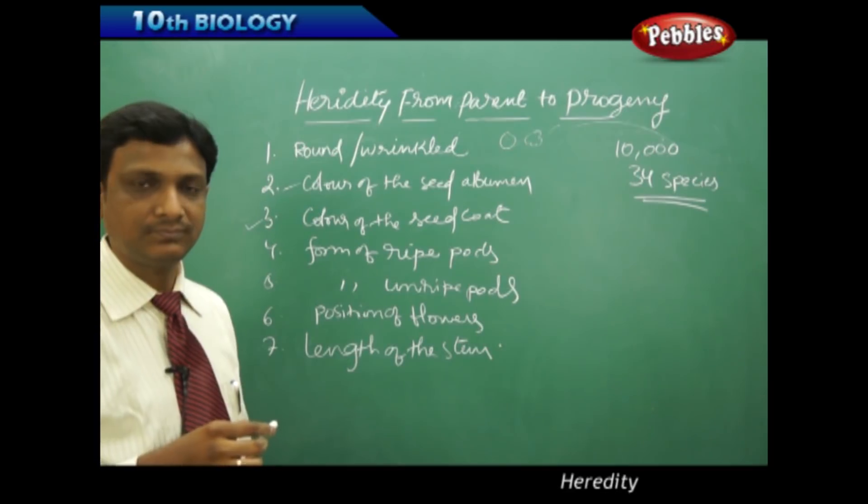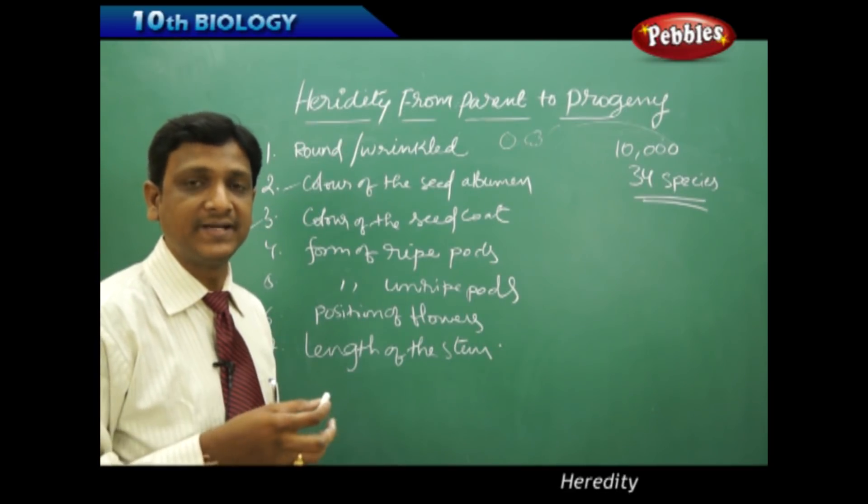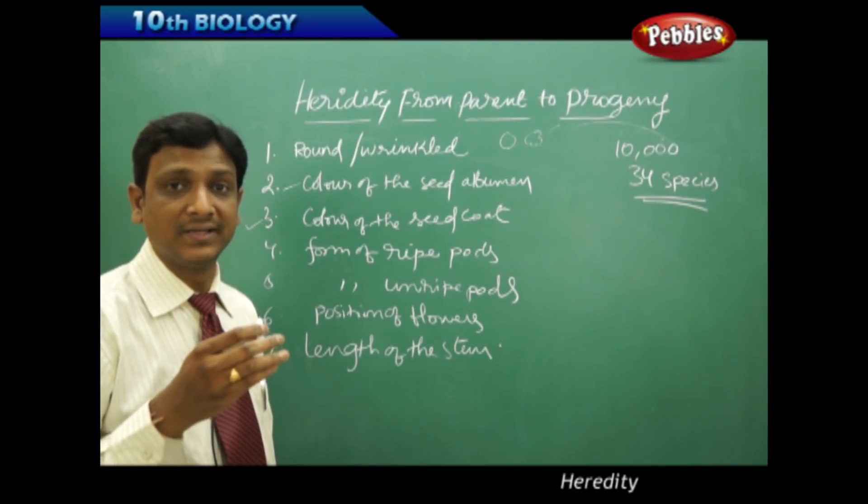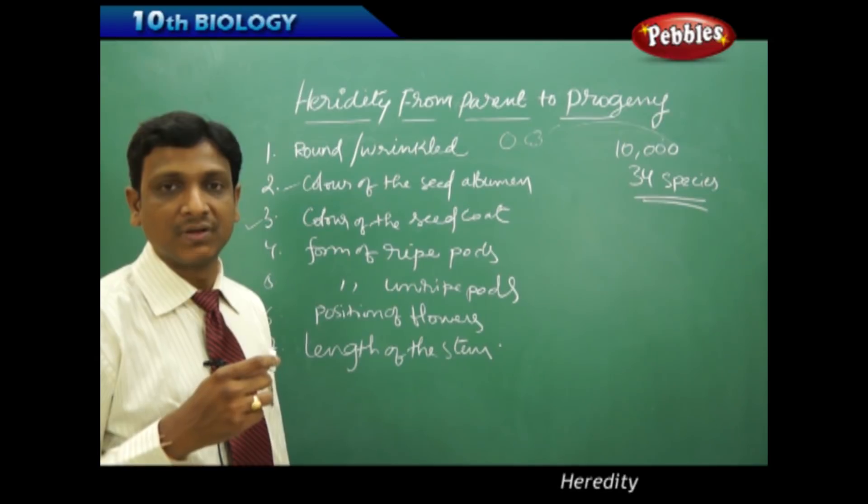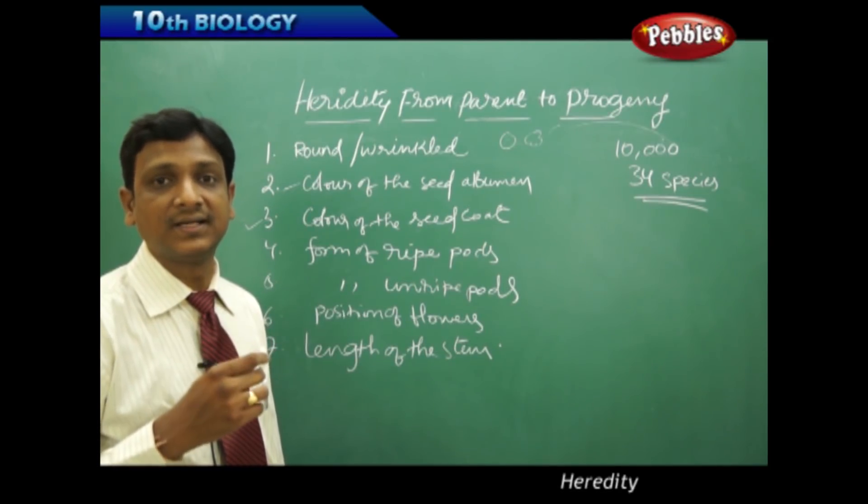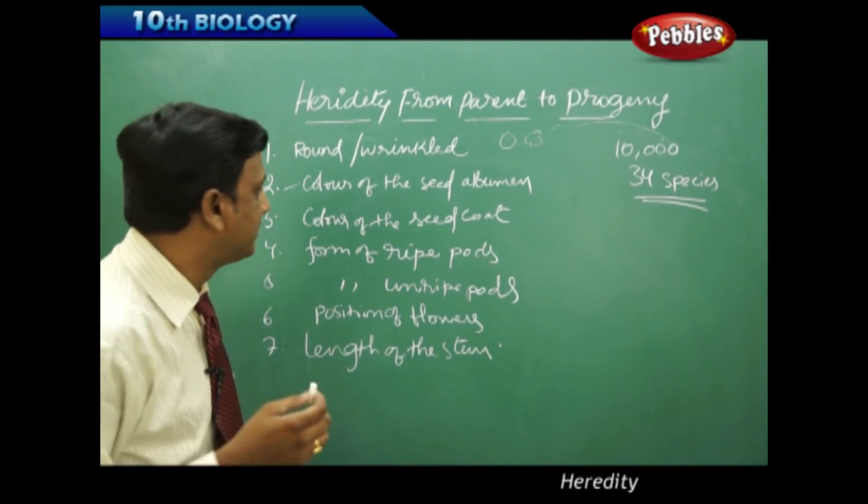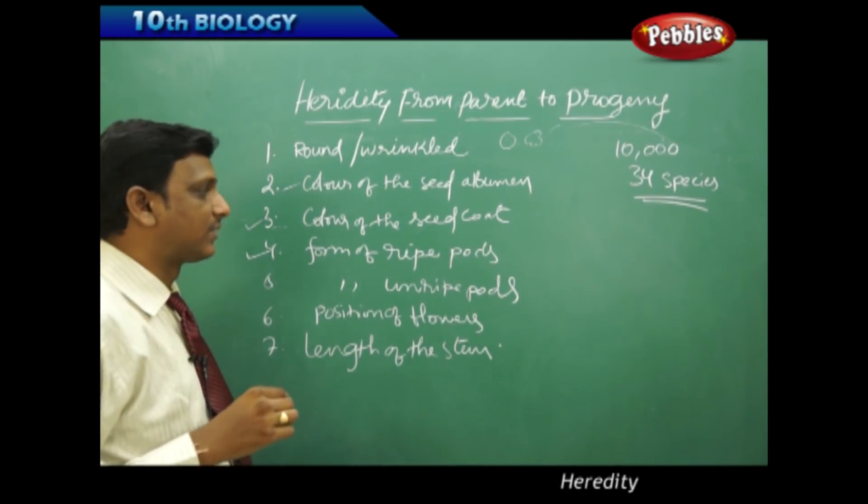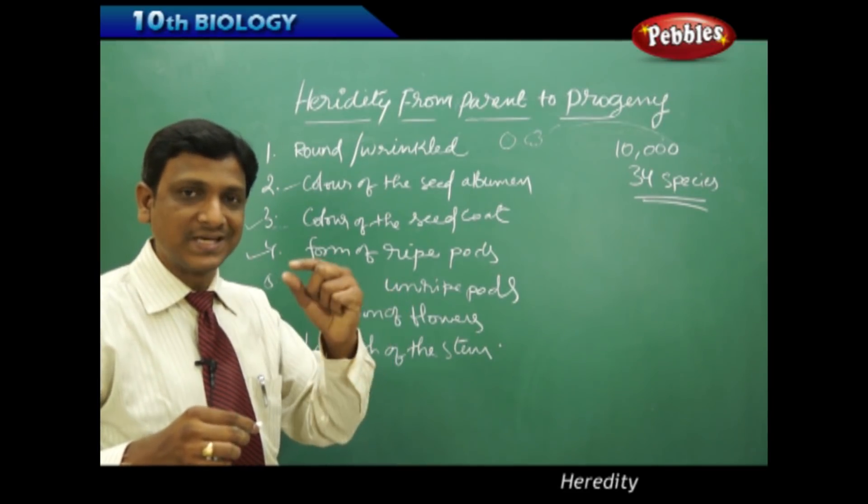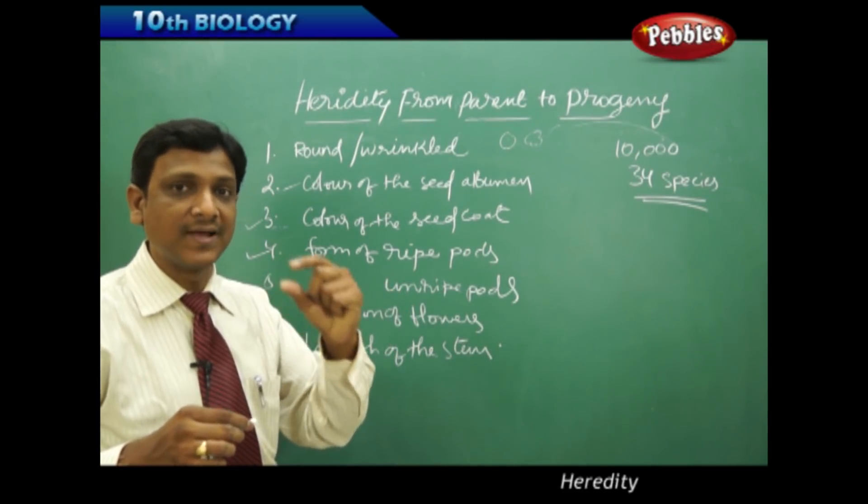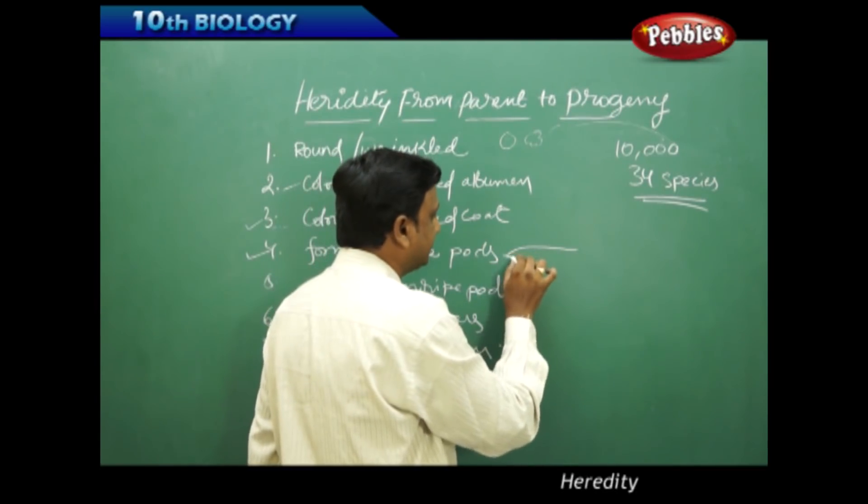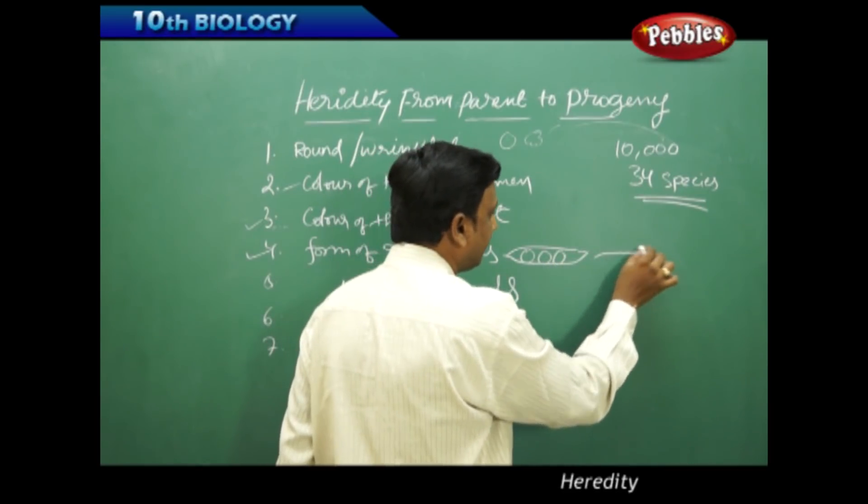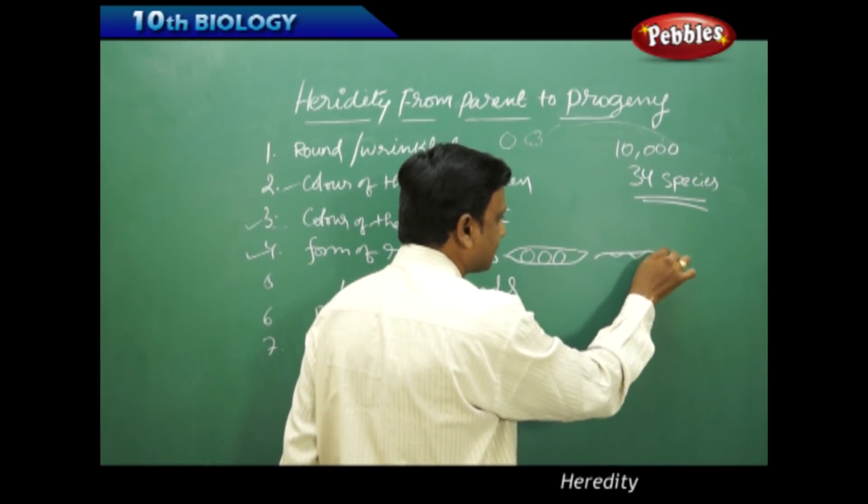Color of the seed coat: whether it is white like the flower, or sometimes purple, violet, spotted, without spotting, brown, leather color, or gray. Different colors are observed in the seed coat. Form of ripe pods - the pod which contains the peas. After ripening, is the pod just flat like this with seeds inside, or will it have compressions or constrictions like this?